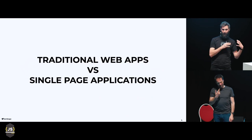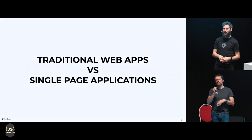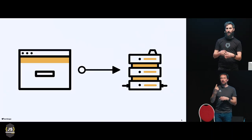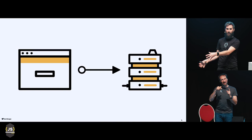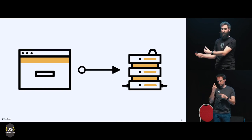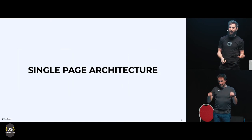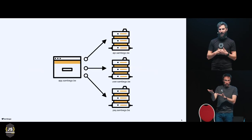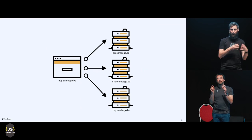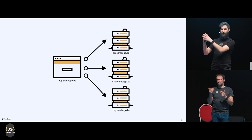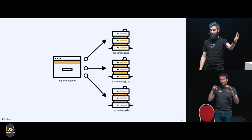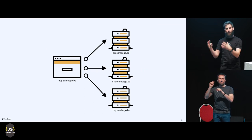So what's the difference with a single-page application? The traditional architecture is usually one-to-one — you have your web app and it's related to a server. But when you have a single-page architecture, you can have a bunch of microservices, or your app lives in one domain and your APIs live in different domains — like one for a general API, one for user data, one for payment data.